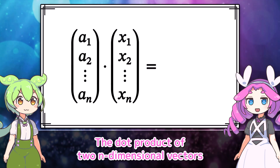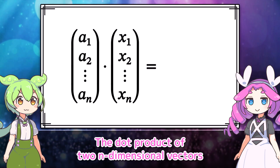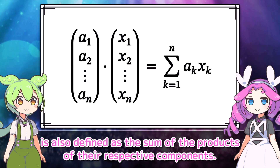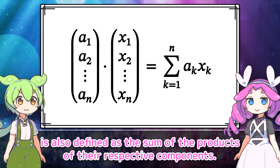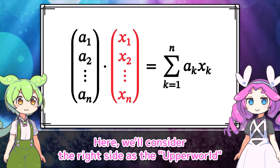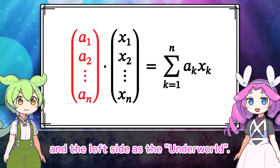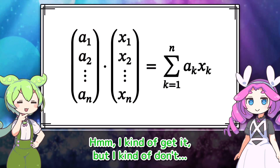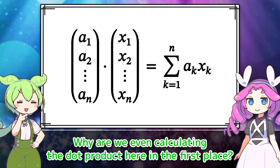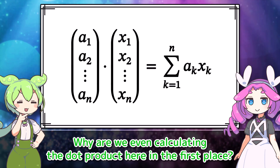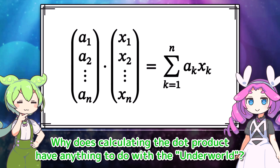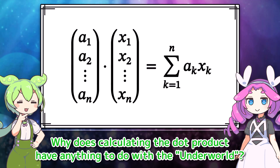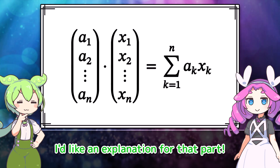The dot product of two n-dimensional vectors is also defined as the sum of the products of their respective components. Here, we'll consider the right side as the upper world and the left side as the underworld. I kinda get it, but kinda don't. Why are we even calculating the dot product here in the first place? Why does calculating the dot product have anything to do with the underworld? I'd like an explanation for that part.